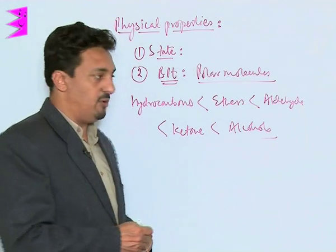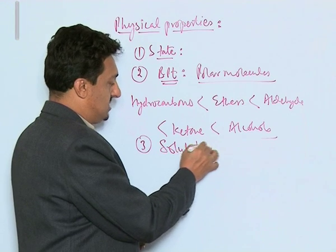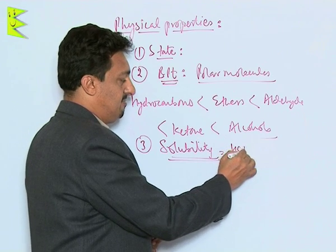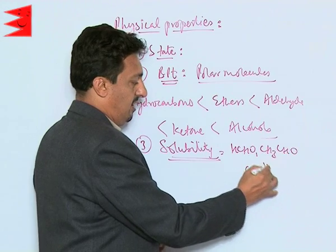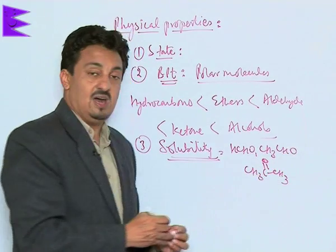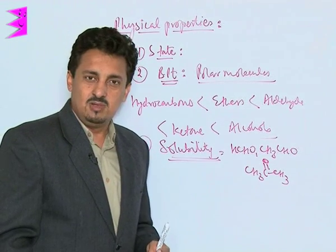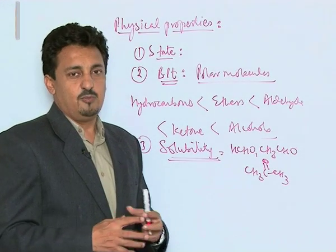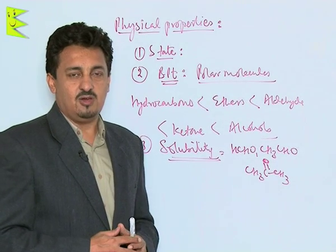Let us talk about their solubility. Except for the first members — methanal, ethanal, and propanone — which have smaller alkyl groups and are soluble in water in all proportions, the other aldehydes and ketones are not soluble in water. As the carbon chain increases, their solubility decreases because of strong hydrophobic repulsions from the alkyl chains. However, they are all soluble in organic solvents.